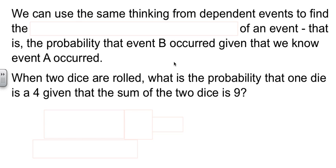Now we can use the same kind of thinking about dependent events to find what's called conditional probability. What is the probability that B occurred, given that we already know A occurred?